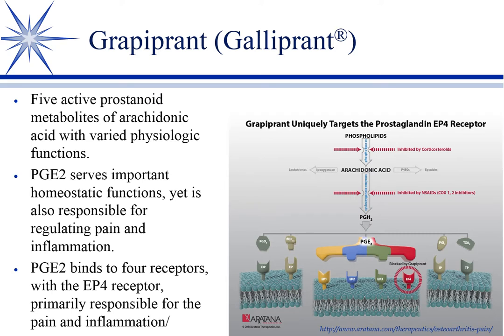They found that prostaglandin E2 has four receptors, and the fourth one — EP4 — is primarily responsible for pain and inflammation. This diagram shows phospholipids in the membrane being worked on by phospholipase. Here's where steroids work. You get arachidonic acid, which is acted on by cyclooxygenase to give an intermediate prostaglandin that goes on to produce prostaglandins 1 through 5.